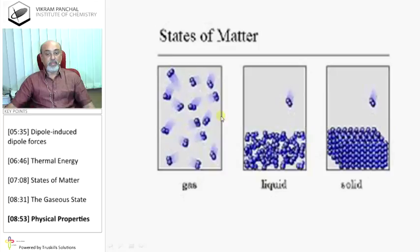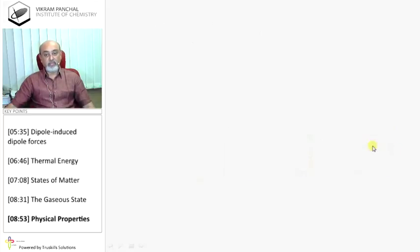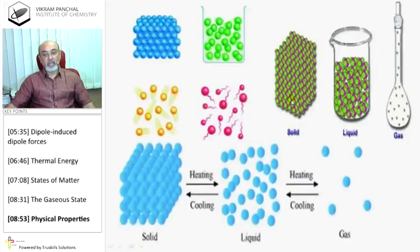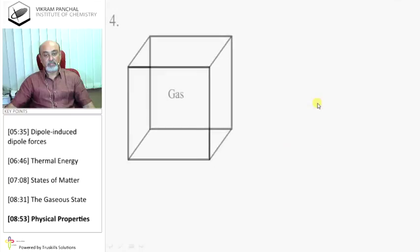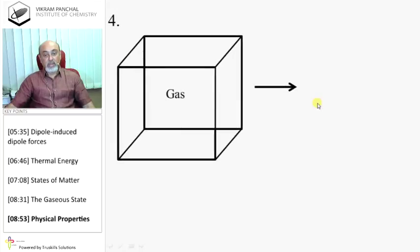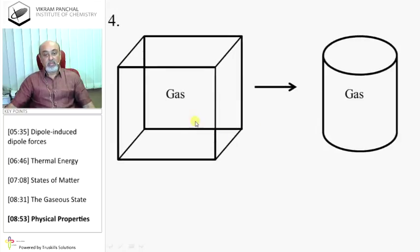States of Matter: Gas, Liquid, and Solid. And this you can see in different examples. Gas: if you fill it in a different container, it will gain different shapes. So shape and volume of the container only.